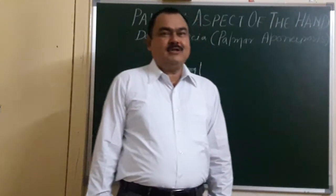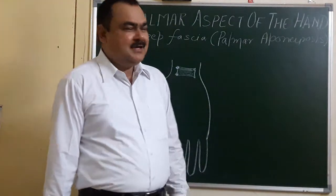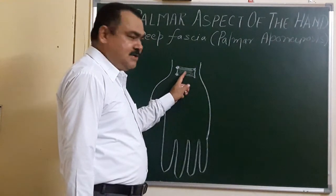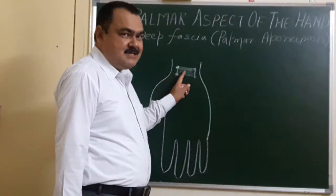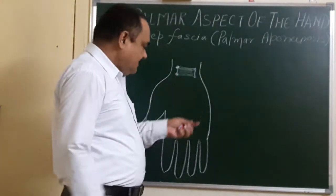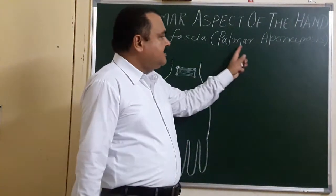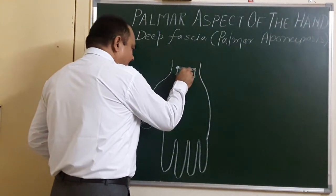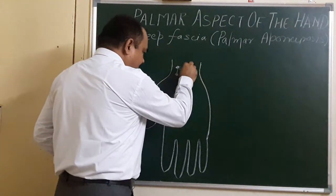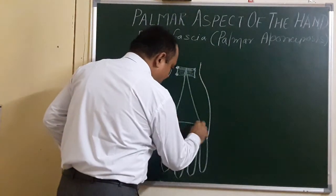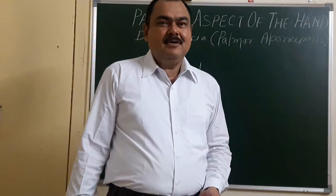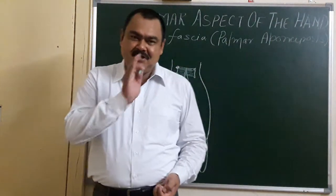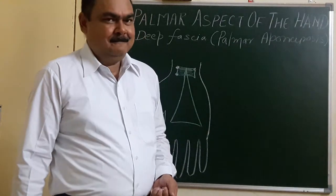Now we'll discuss the modification of deep fascia of the palmar aspect of the hand. In the previous lecture, you have seen the modification of deep fascia — the flexor retinaculum. Now we'll discuss the detail of the other modification, that is palmar aponeurosis. Morphologically, this palmar aponeurosis is a flattened tendon of palmaris longus — it is a degenerated part of the palmaris longus fascia.